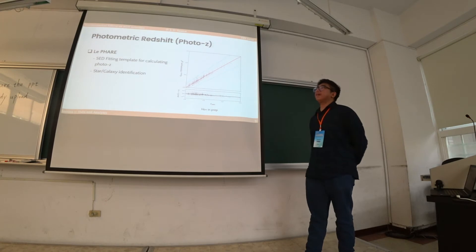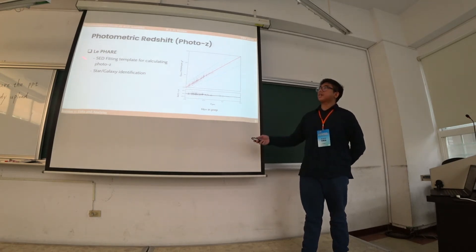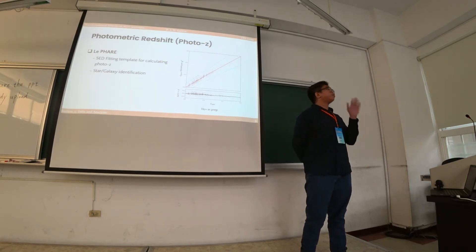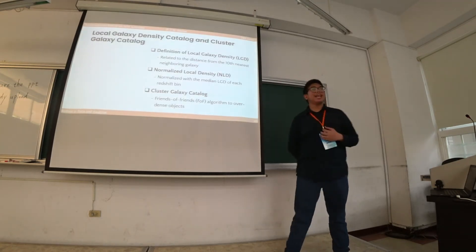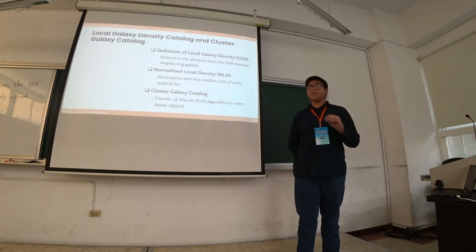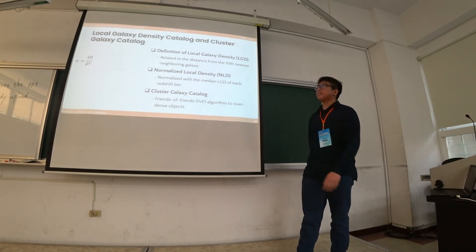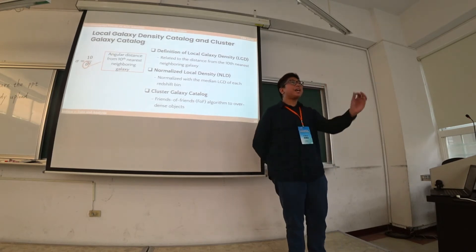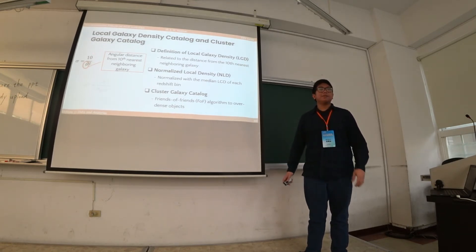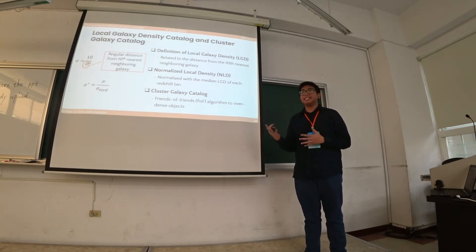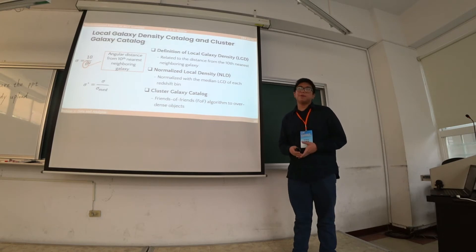The photometric redshifts are provided by Simon Ho using an SED fitting template code called EAZY. We also used the star-galaxy identification from his research to ensure we are only working on galaxies. Lastly, we have the local galaxy density and cluster galaxy catalog provided by Kevin Wong. We use local galaxy density as our main description of environment: the formula is Σ = 10/θ², where θ is the angular distance from the 10th nearest neighboring galaxy. We normalize by the median LGD for each redshift bin, calling the result sigma-star, or normalized local density (NLD).